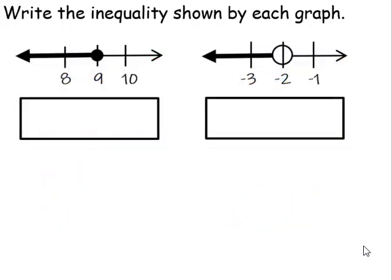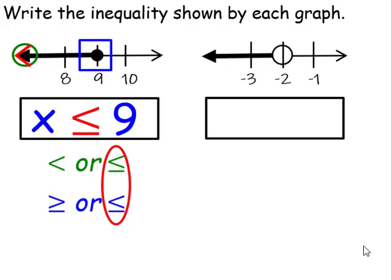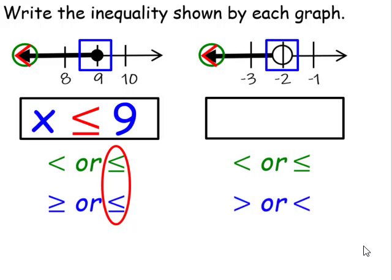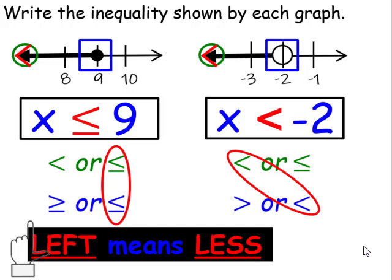Let's take a look at these next two examples. Now our bold arrow is facing in the left direction, so we're going to be using less than or less than or equal to. Our circle is a closed dot, so that's going to be either greater than or equal to or less than or equal to — and we can see it's going to be less than or equal to. Our closed dot is located at 9. In the next one, the bold arrow is facing left, it's an open circle, so it's going to be less than. Our open circle is located at negative 2. Remember: left means less and less means left.